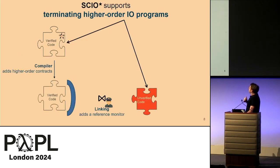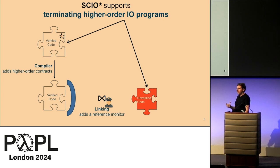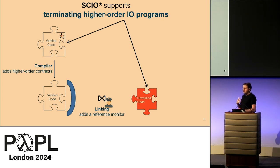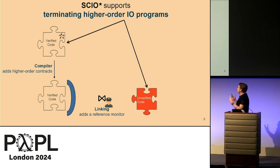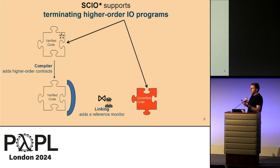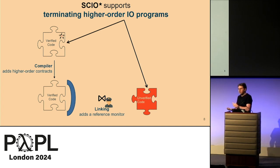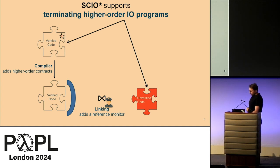SCIO-star currently supports terminating higher-order I/O programs — programs that can open files, write to them, read from them, close them, open sockets, etc. By higher-order, we mean that verified and unverified code communicate through a higher-order interface, meaning they can send callbacks to each other, and thanks to our framework, they can do this securely. Our framework supports both settings: where verified code has initial control, and where unverified code has initial control. We proved our secure compilation criteria in both cases.